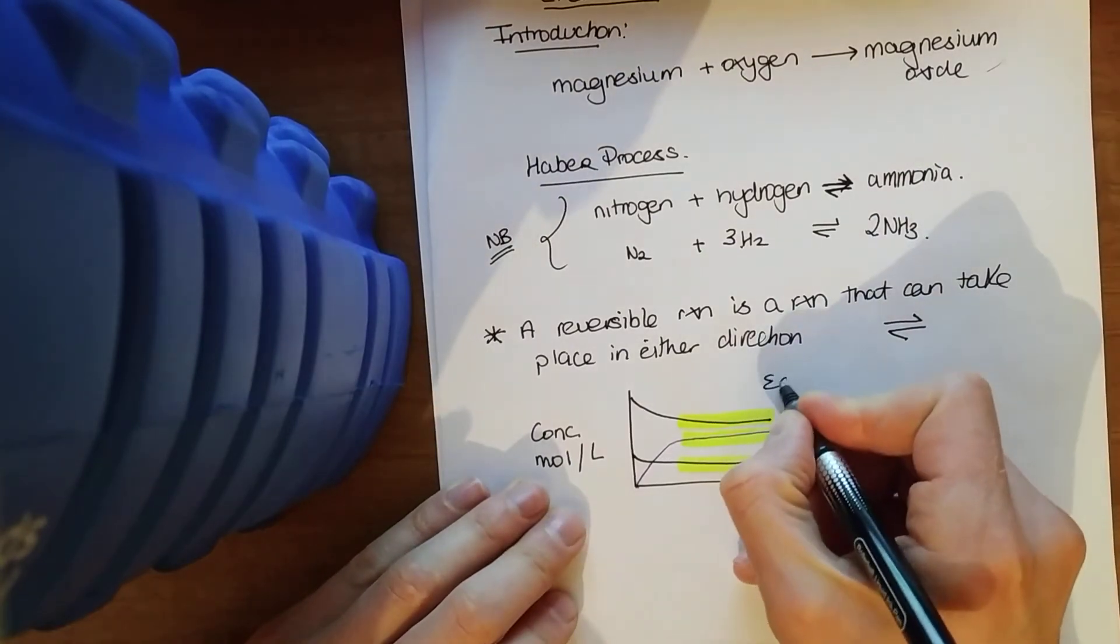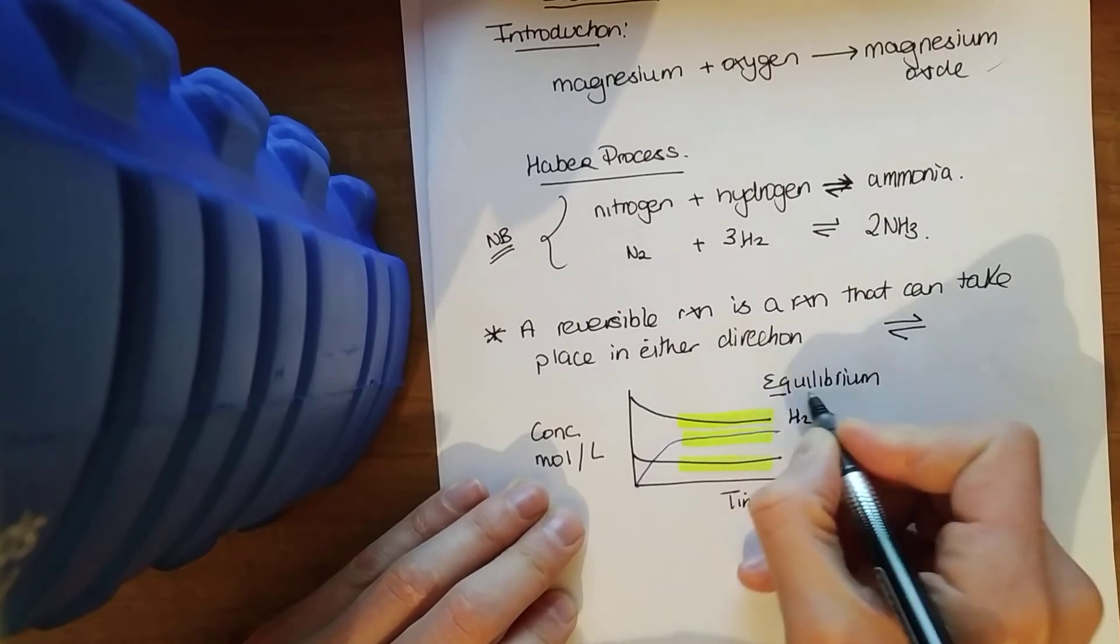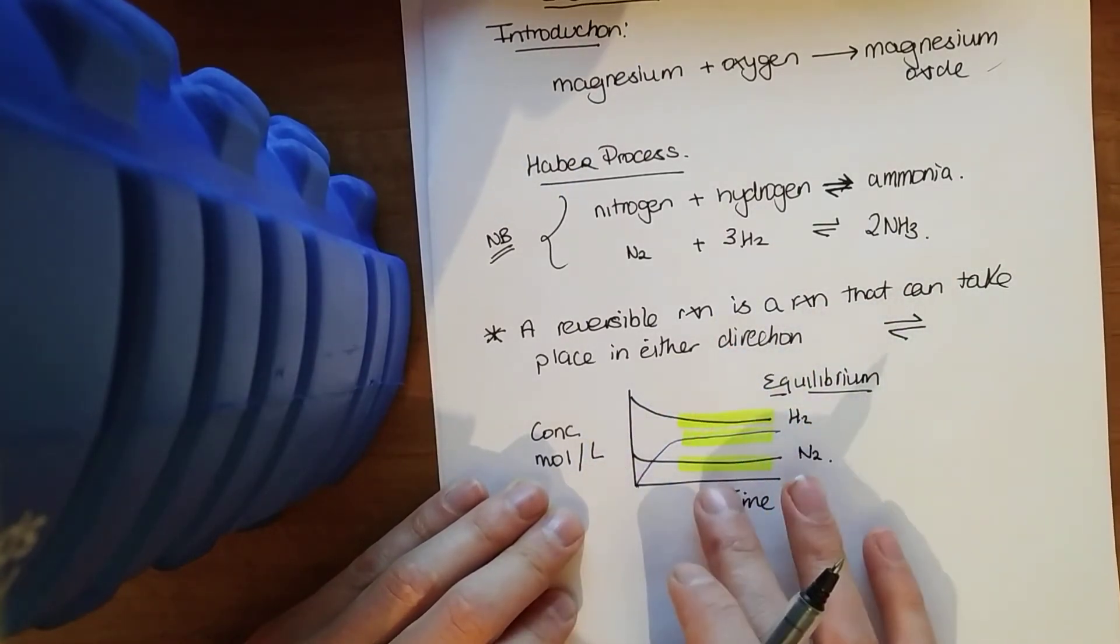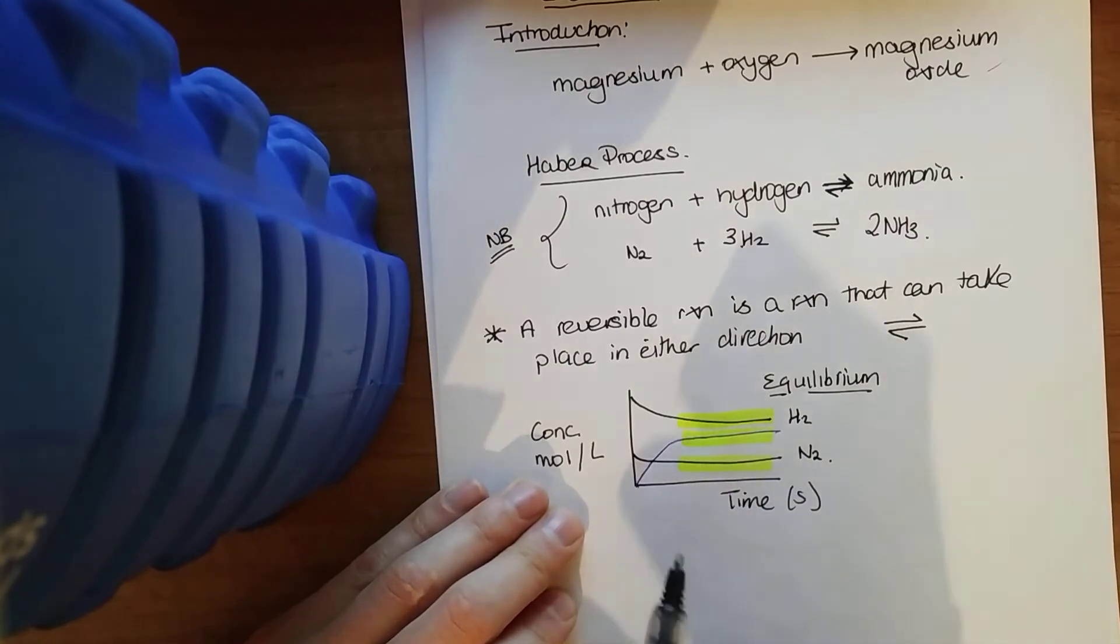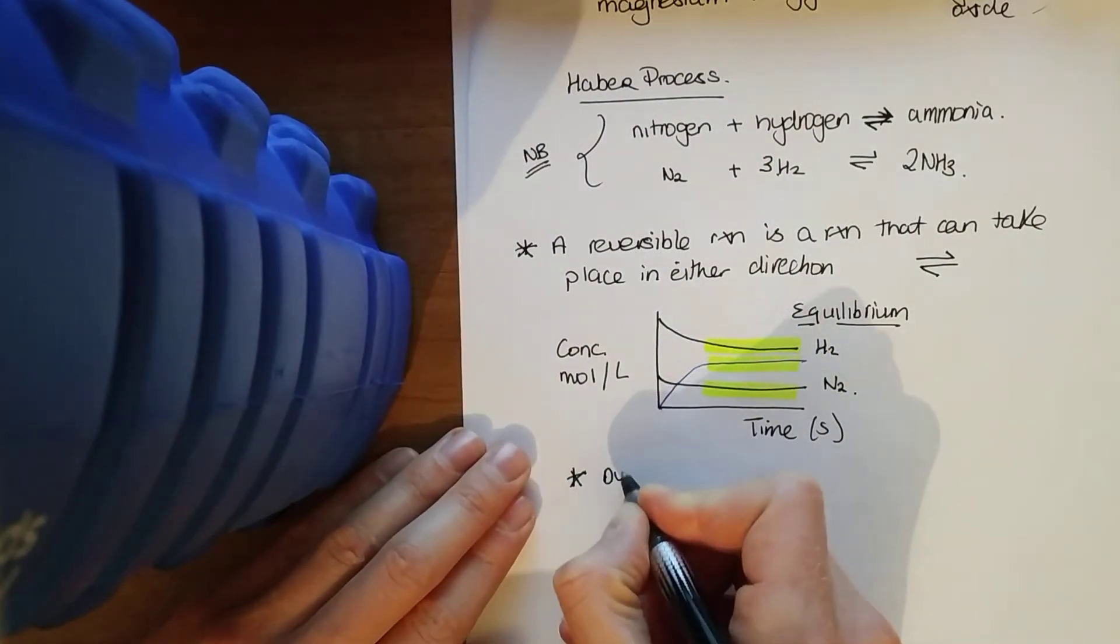So it looks like there's no reaction occurring, but there is. It looks like the reaction has ceased because the concentration of the reactants and products stays the same, but inside that, there is a reaction occurring. And this state of equilibrium is known as dynamic equilibrium.